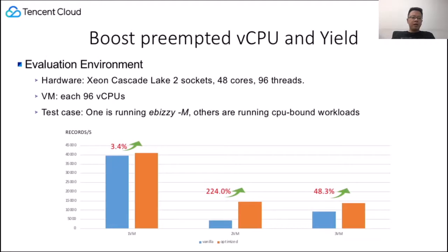Let's see the performance numbers. We tested this on an Intel Cascade Lake — two sockets, 48 cores, 96 threads — with each VM having 96 vCPUs. One VM is running the Ebizzy benchmark, and other VMs running CPU-bound workloads. We can observe a 3.4% improvement for 1 VM, 224% improvement for 2 VMs, and 48.3% improvement for 3 VMs. SMP call function many calls can be on the call function interrupts and TLB shootdown path, with disabled parallel virtual TLB shootdown feature in this testing.